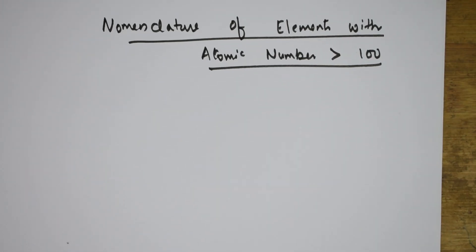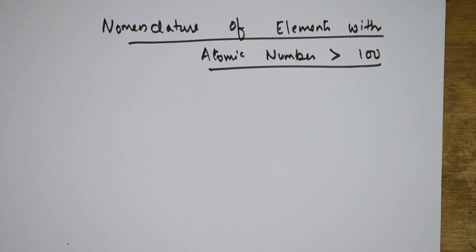Welcome back students. After electron affinity and electronegativity, now we will be learning the last topic of the chapter, that is nomenclature of elements with atomic number greater than 100.